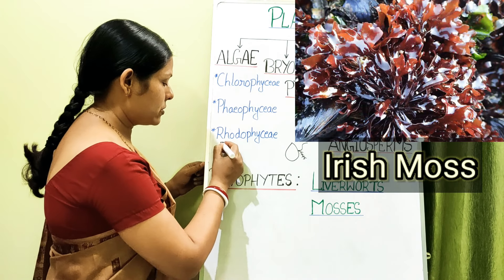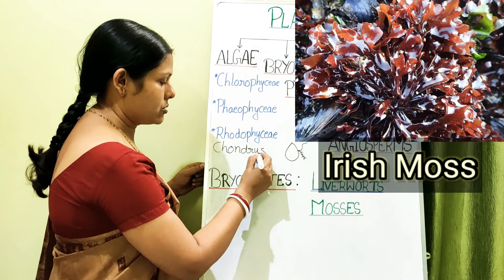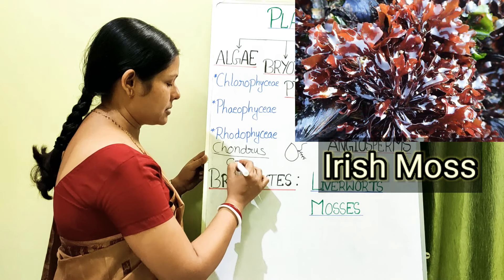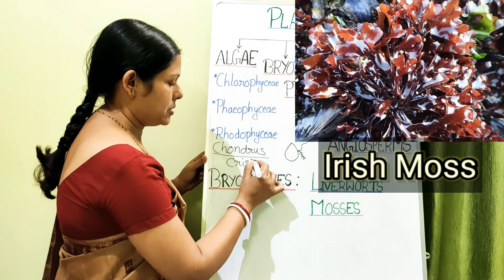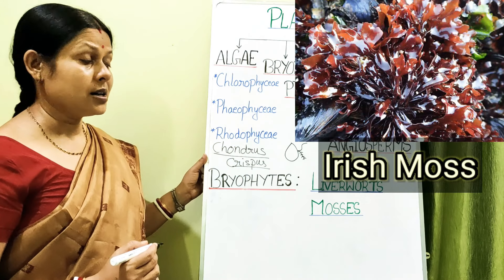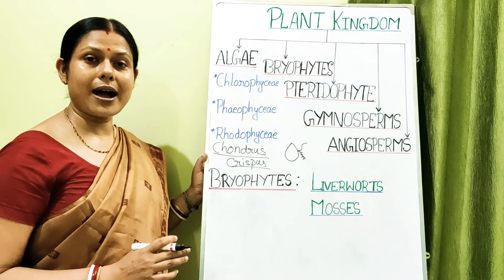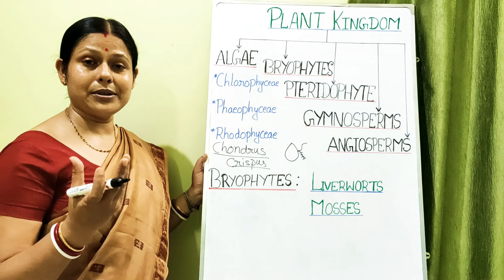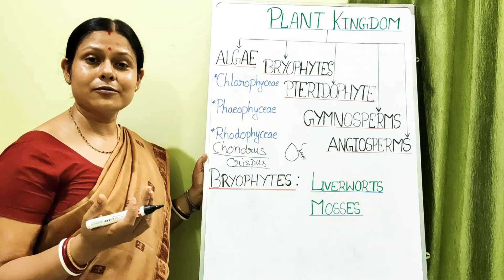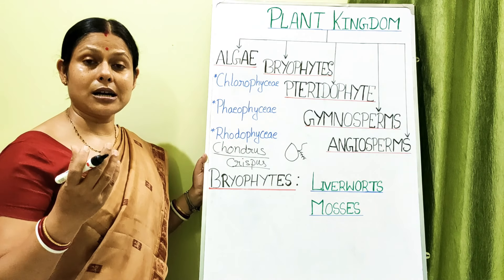The scientific name of Irish moss is Chondrus crispus. It is called Irish moss because it appears somewhat like moss in external features, but it is actually an alga, reddish in color. It gives a product called carrageenan.